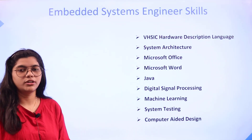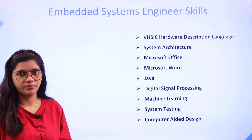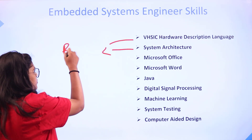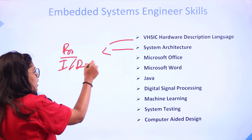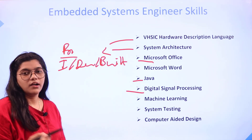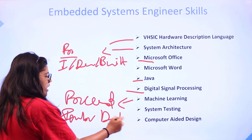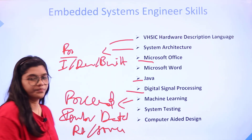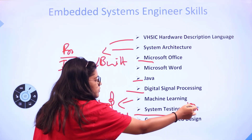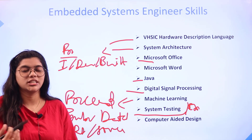Now we look at the skills part — the set of skills an embedded systems engineer should know. The first is hardware description language, physics, and system architecture — how the system is processed, implemented, and built. Then there is MS Office, Microsoft Word, Java, digital signal processing, machine learning, database management, and testing processes to understand risks and issues. Finally, computer-aided design. These are the key skills an embedded systems engineer should develop throughout their career.